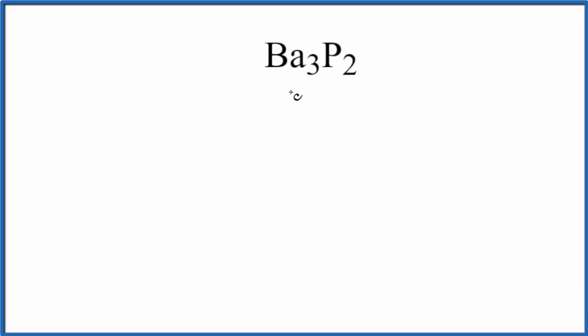In this video, we'll write the Lewis structure for Ba3P2. This is barium phosphide. Barium phosphide is an ionic compound.